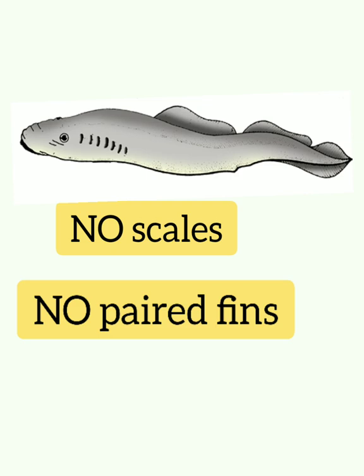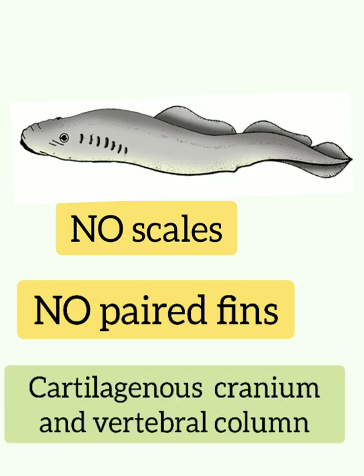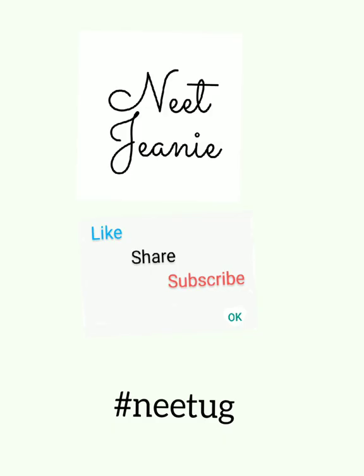Cyclostomes have no scales, no paired fins, and they have a cartilaginous cranium and vertebral column.